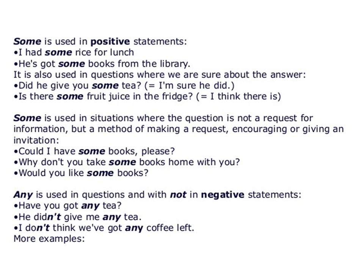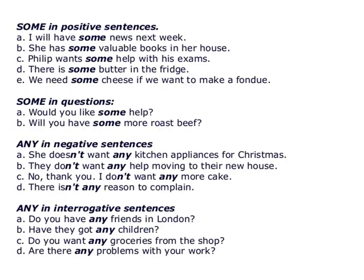Some is also used when a question is a method of making a request: 'could I have some books please?' Any is used in negative statements — 'have you got any tea?' where the expected answer is no; 'he didn't give me any tea'; 'I don't think we have got any coffee left.' The basic rule is that some is for positive sense and any is for negative. In interrogative sentences, some implies an expected yes, and any implies an expected no.